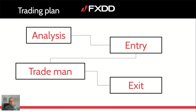It is important to distinguish different phases of when you're trading: analysis, entries, trade management, and exits. The tools you use for each phase could be different. You could use moving averages for analysis but not for entry, and fibs for entry but not for exits. These are the four phases where you want a clear plan on what you do.